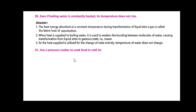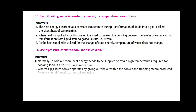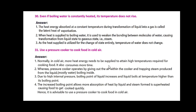It is advisable to use a pressure cooker to cook food in cold regions. Normally, in cold regions, more heat energy needs to be supplied to attain the high temperature required for cooking food, and it also consumes more time. A pressure cooker operates by expelling the air within the cooker and trapping steam produced from the liquid — mostly water — boiling inside. Due to high internal pressure, the boiling point of this liquid increases and liquid boils at a temperature higher than normal boiling point. The increased boiling point allows more absorption of heat, causing food to get cooked quickly.